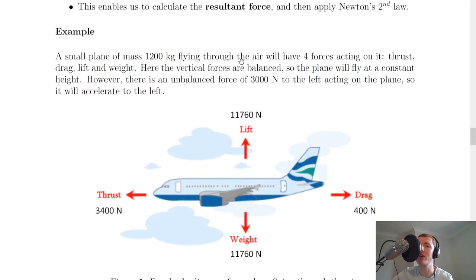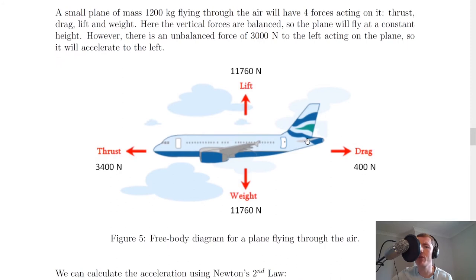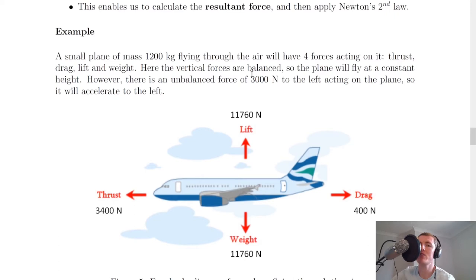So as an example, a small plane of mass 1200 kilograms flying through the air will have four forces acting on it, thrust, drag, lift and weight. So we've got in the picture lift upwards and weight downwards, and we've got drag moving against the direction of the plane, and we've got thrust here from the engines of the plane.